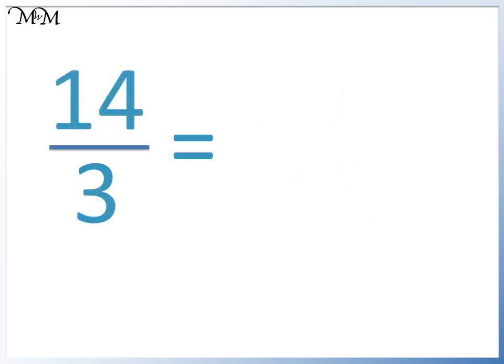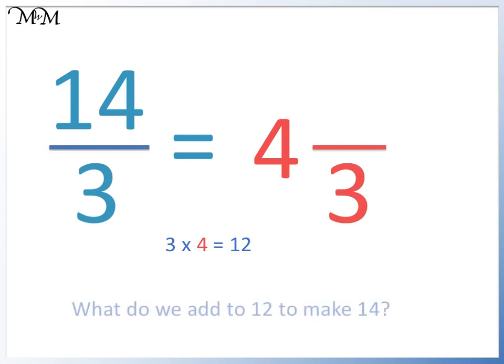Here we have 14 out of 3. How many times does 3 go into 14? 3 times 4 equals 12. So we have 4. Our answer is in thirds. What do we need to add to 12 to make 14? We add 2. 14 out of 3 equals 4 and 2 thirds.